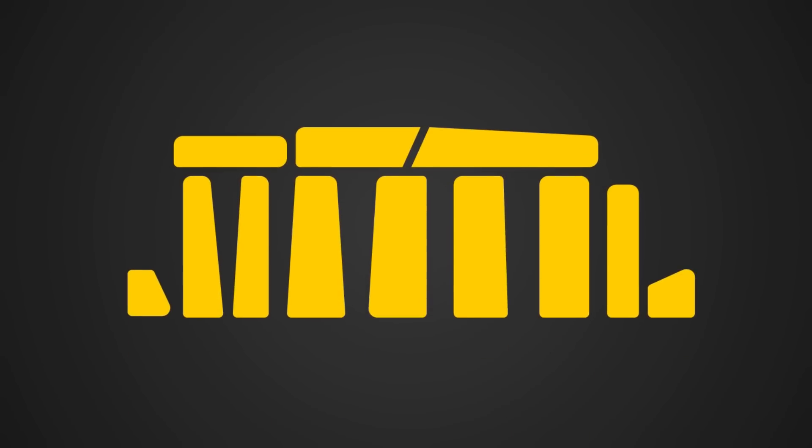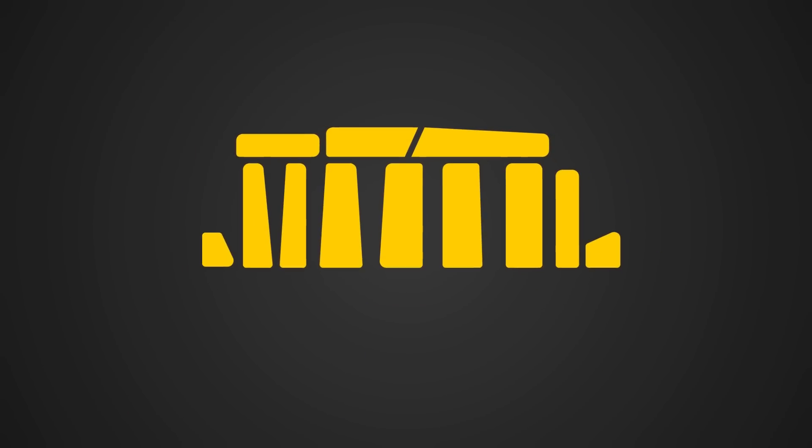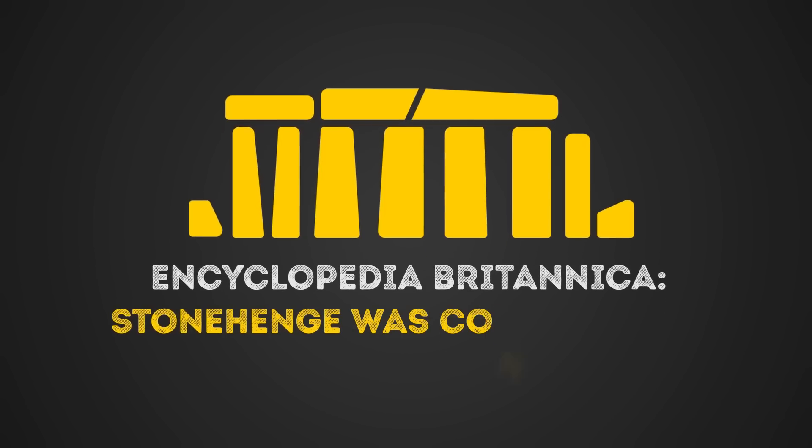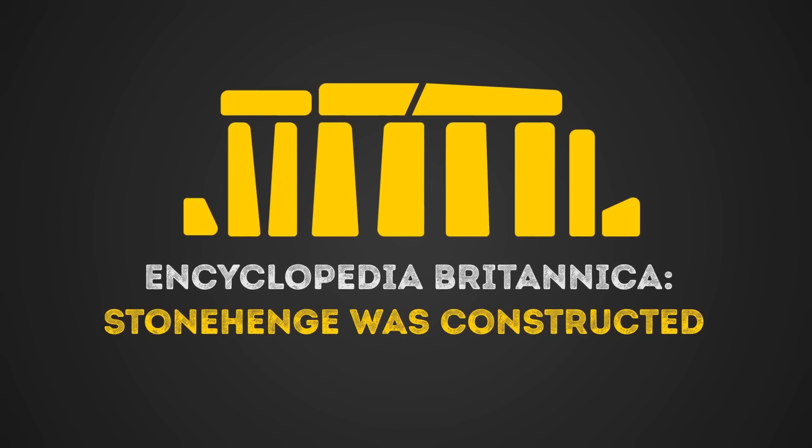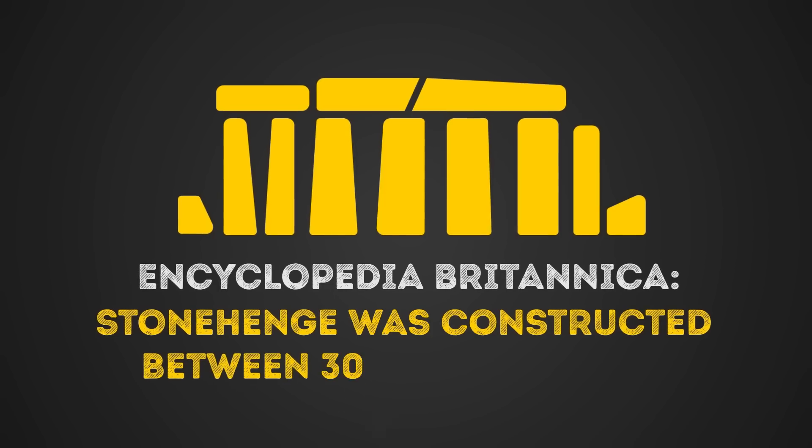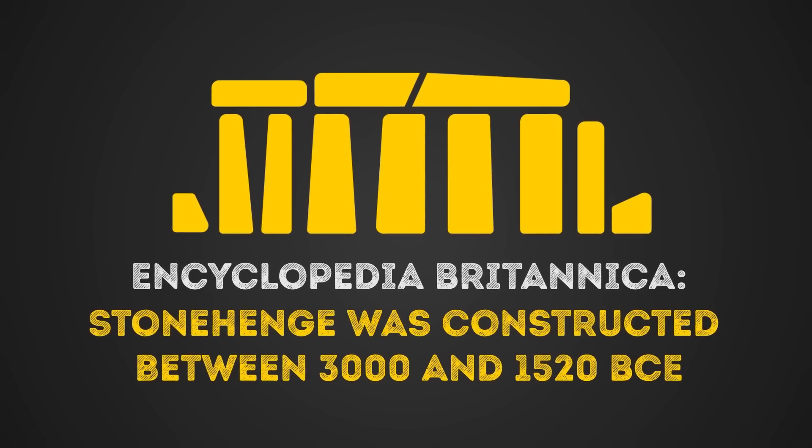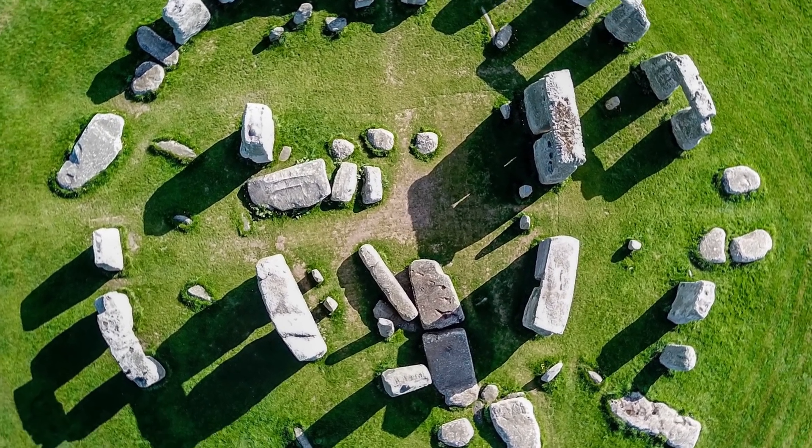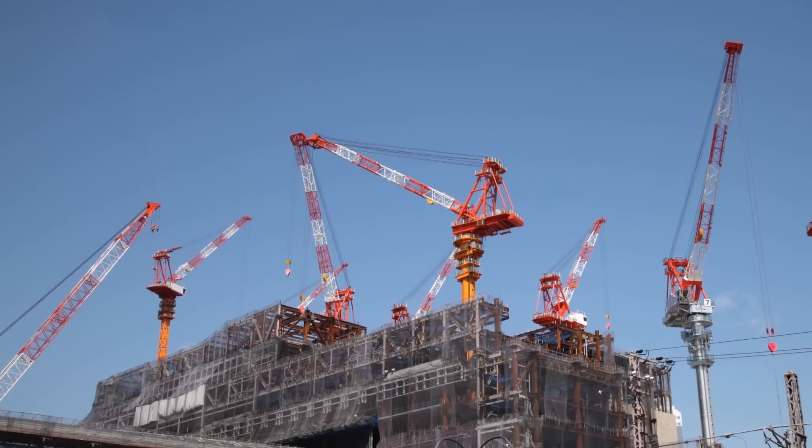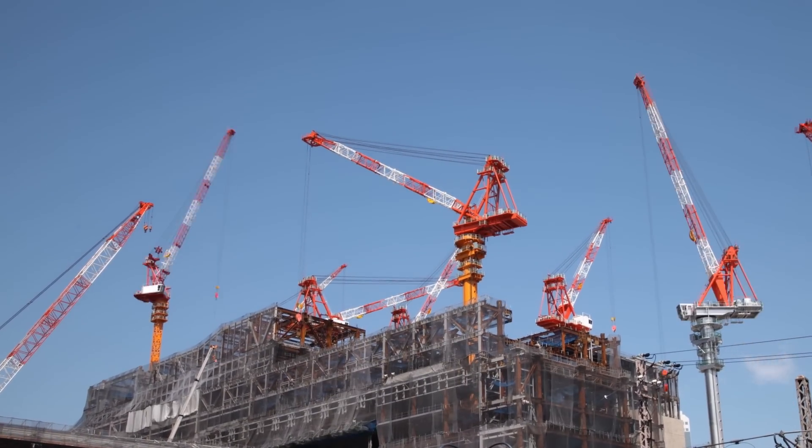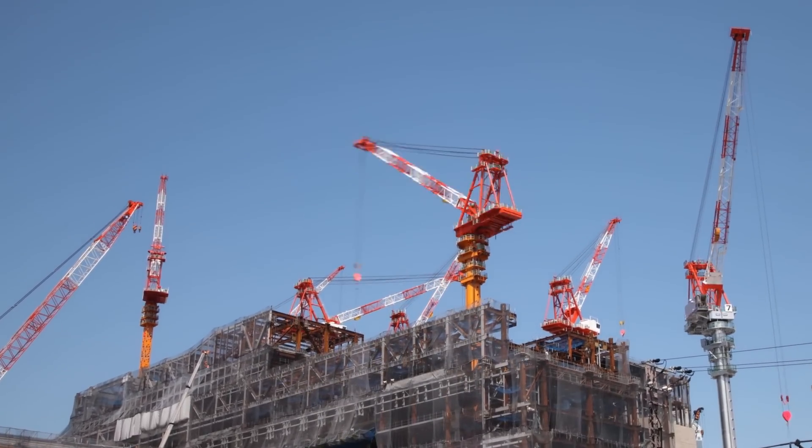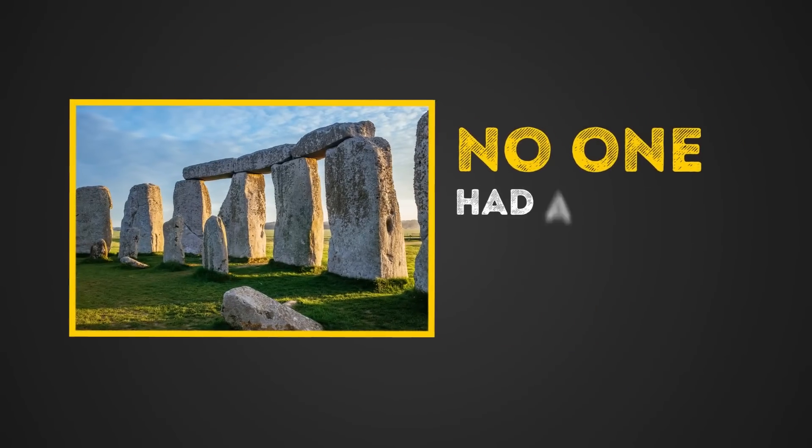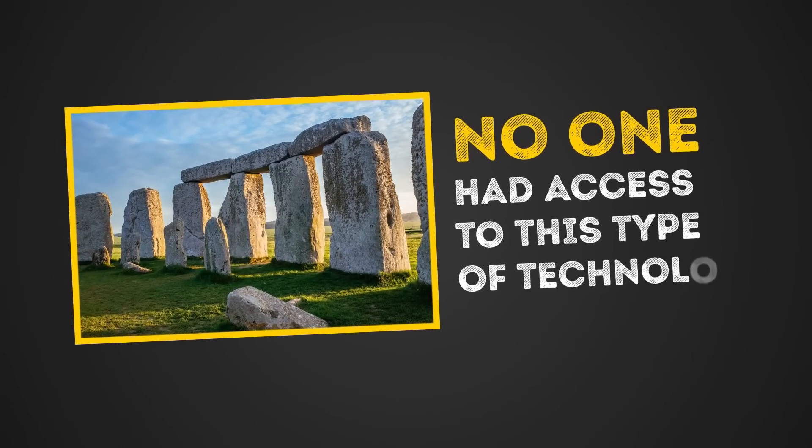This prehistoric stone formation has been sitting in this spot for thousands of years. According to the Encyclopedia Britannica, Stonehenge was constructed in 6 stages between the years 3000 and 1520 BCE. But what's so interesting about a bunch of giant rocks? A lot, actually. While today we have machines that can help us lift heavy materials to build giant buildings and monuments, back in the days when Stonehenge was built, no one had access to this type of technology.